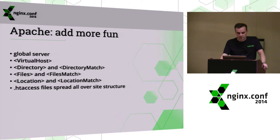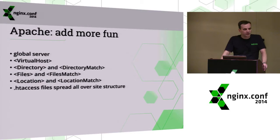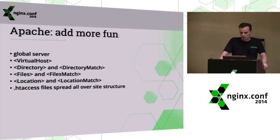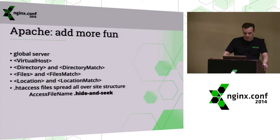To make your configurations even more cumbersome, Apache provides half a dozen other sections, such as virtual host, directory, files, and locations, which can be used with prefix strings or regular expressions. Some of these sections and other Apache directives can be used in numerous .htaccess files spread all over the site structure. And Apache even allows renaming the default name of the .htaccess file. Last but not least, there are rewrite rules, which allow you to make your configuration completely unreadable.